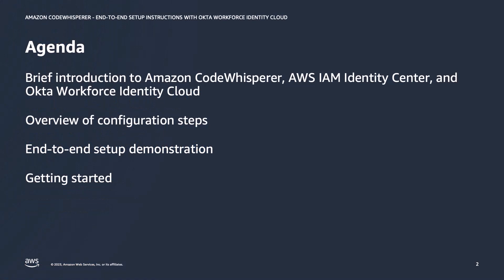I will begin by giving you a brief introduction to the three main components I will be working with: Amazon CodeWhisperer, AWS IAM Identity Center, and Okta Workforce Identity Cloud. Next, I will give you a high-level overview of the AWS account structure I'm working with, as well as the steps involved in connecting the components. Then I will demonstrate the end-to-end configuration process. Finally, I will give you some resources you can use to get started working with CodeWhisperer on your own.